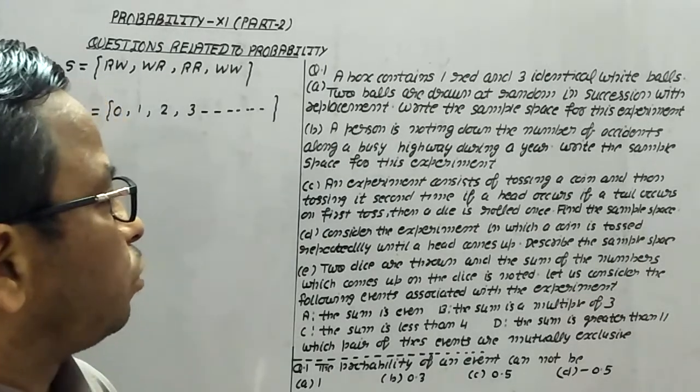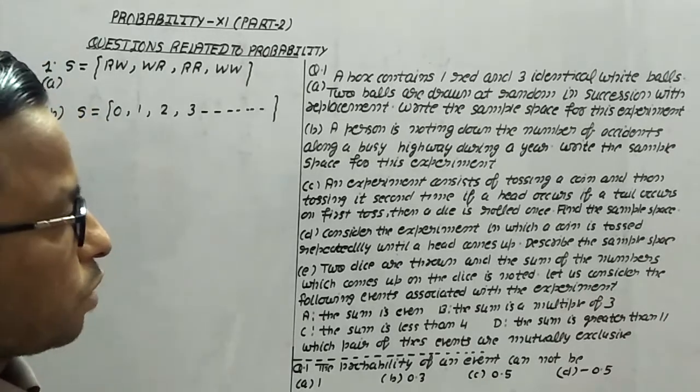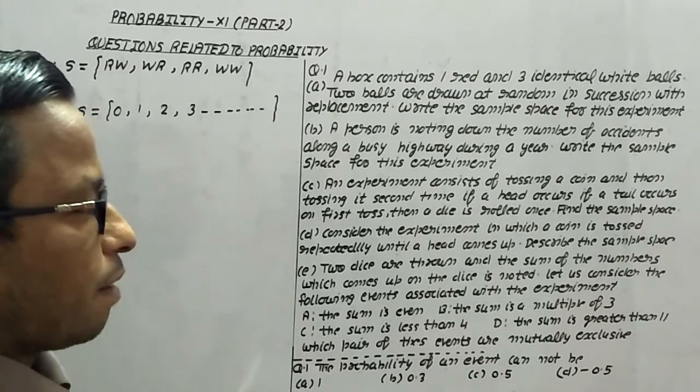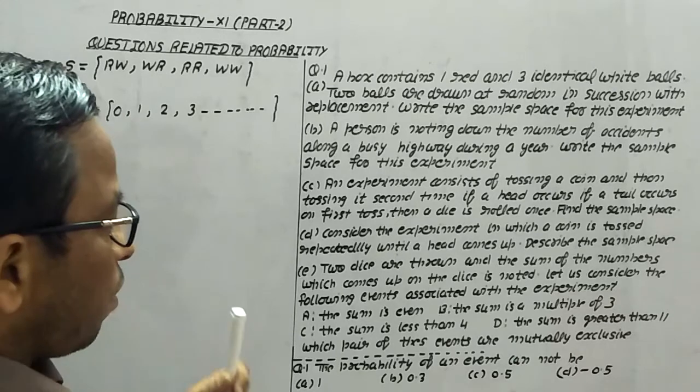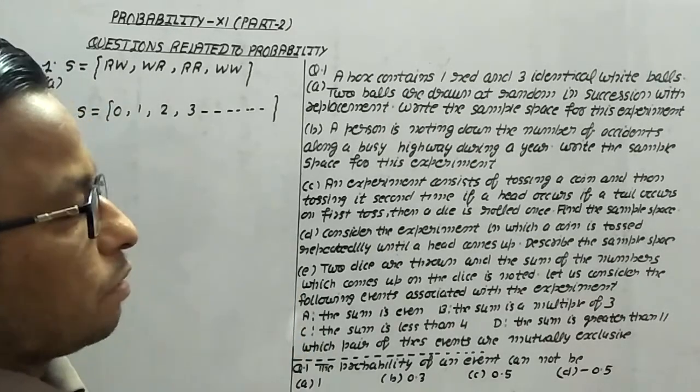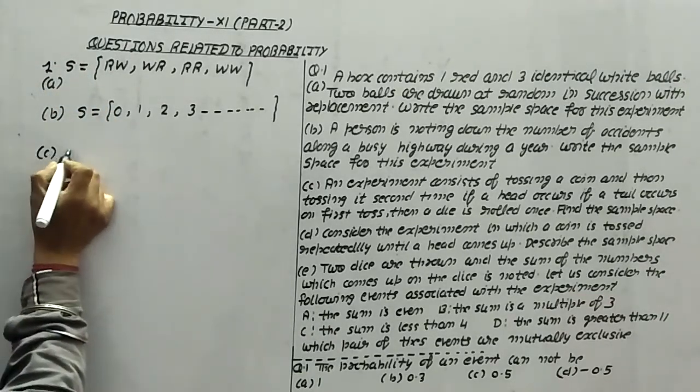Now, question number 1C. An experiment consists of tossing a coin and then tossing it a second time if a head occurs. If a tail occurs on the first toss, then a dice is rolled once. Find the sample space.